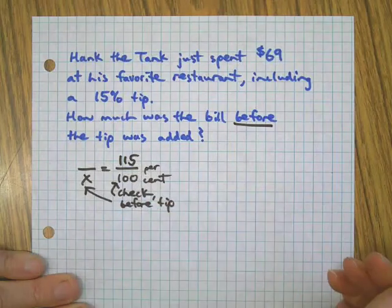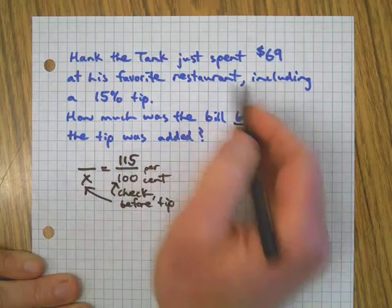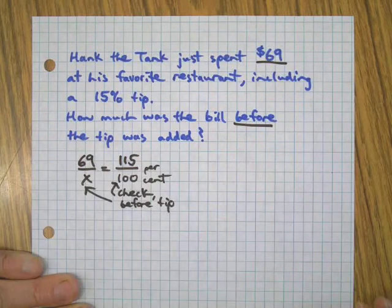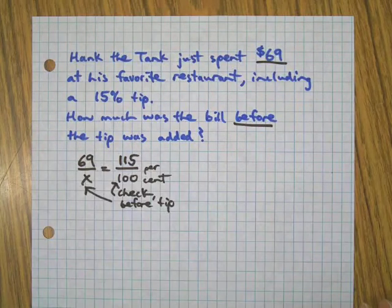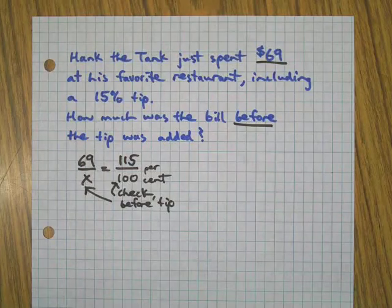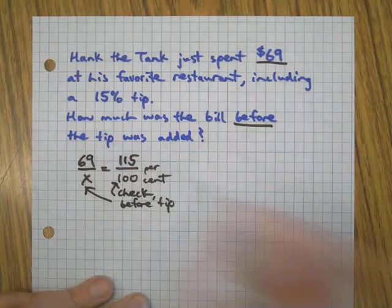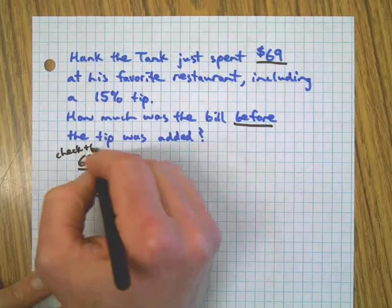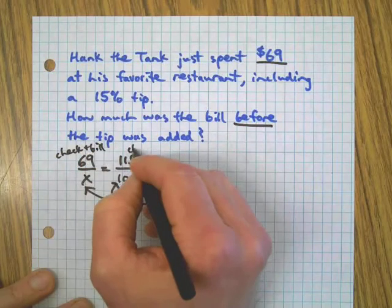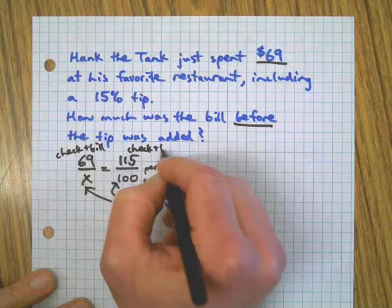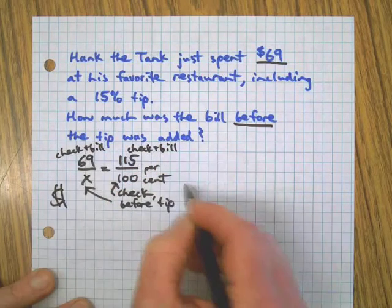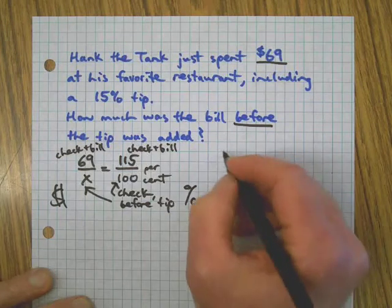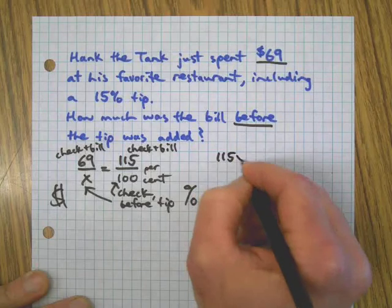So we want - there's our percent, right? This $69 is the price - this is the check. Our question is asking, how much was the check before the tip? Right, before the tip. So this also is the check before the tip. So we've got them all lined up correctly. When I add 15 percent to the check, I'm talking about 115 percent, right?